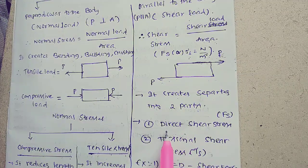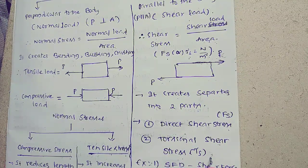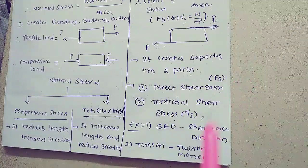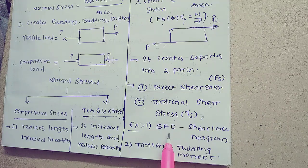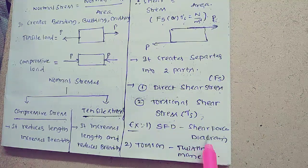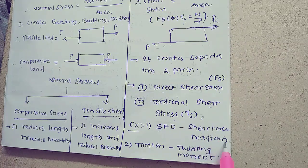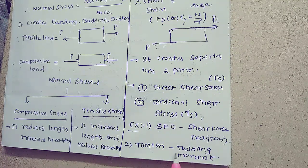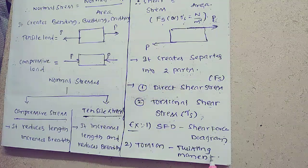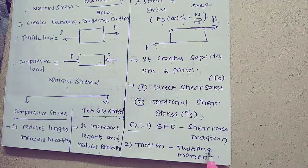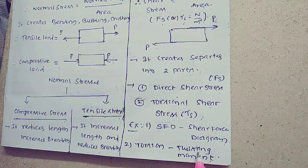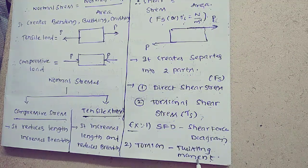Direct shear stress is observed in shear force and bending moment diagrams. Torsional shear stress is observed in twisting moments — for example, when a circular beam is subjected to a twisting moment.